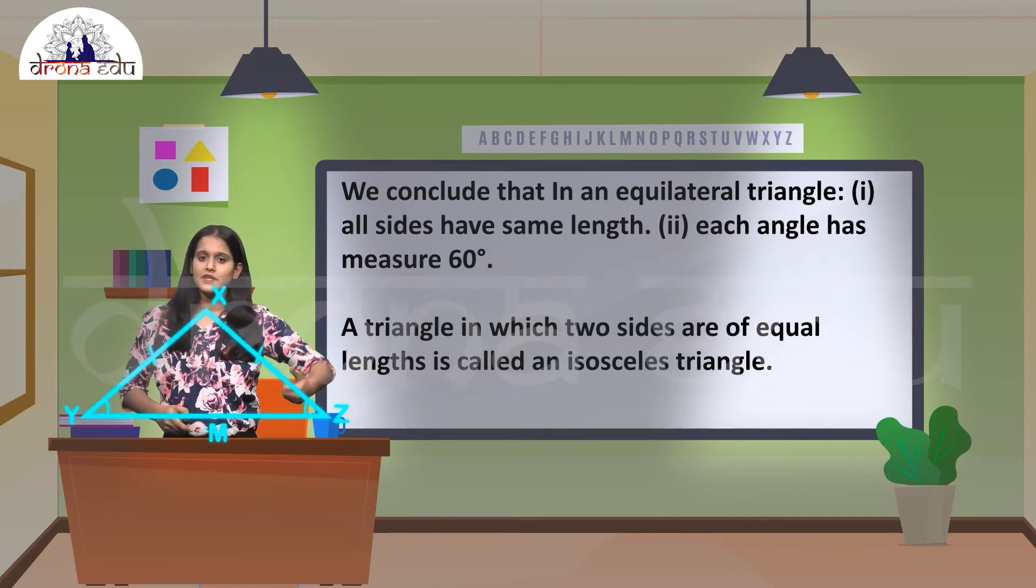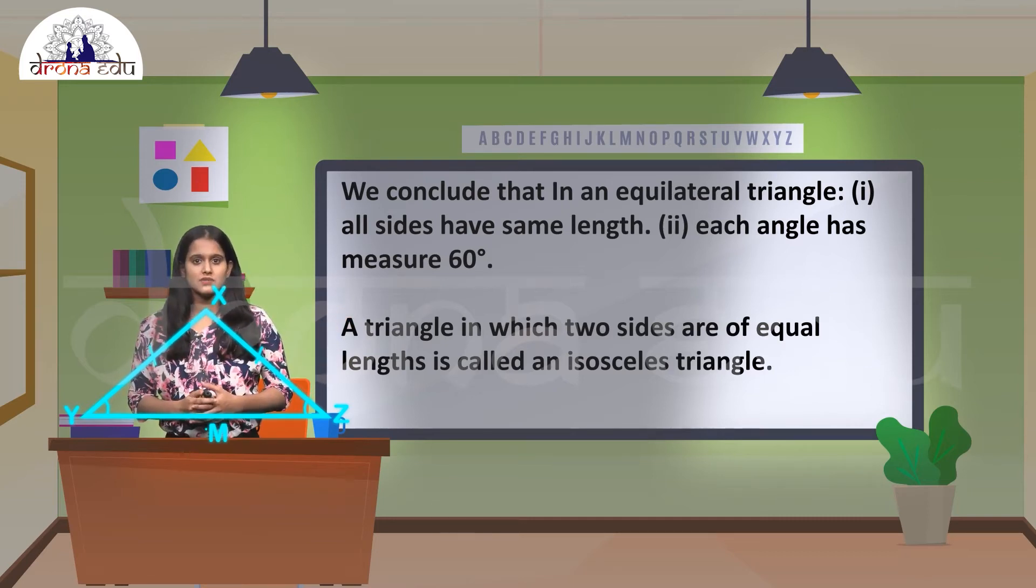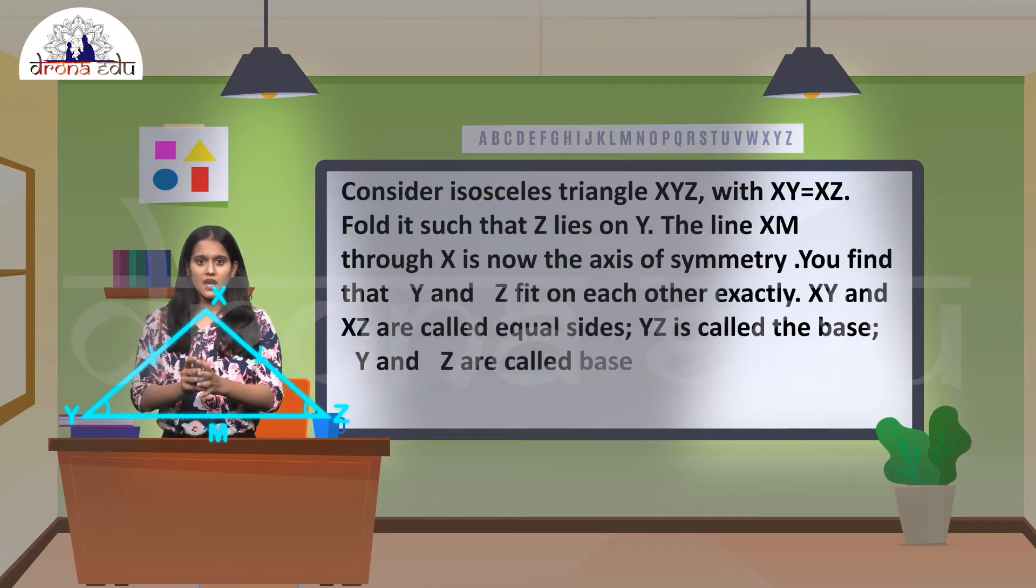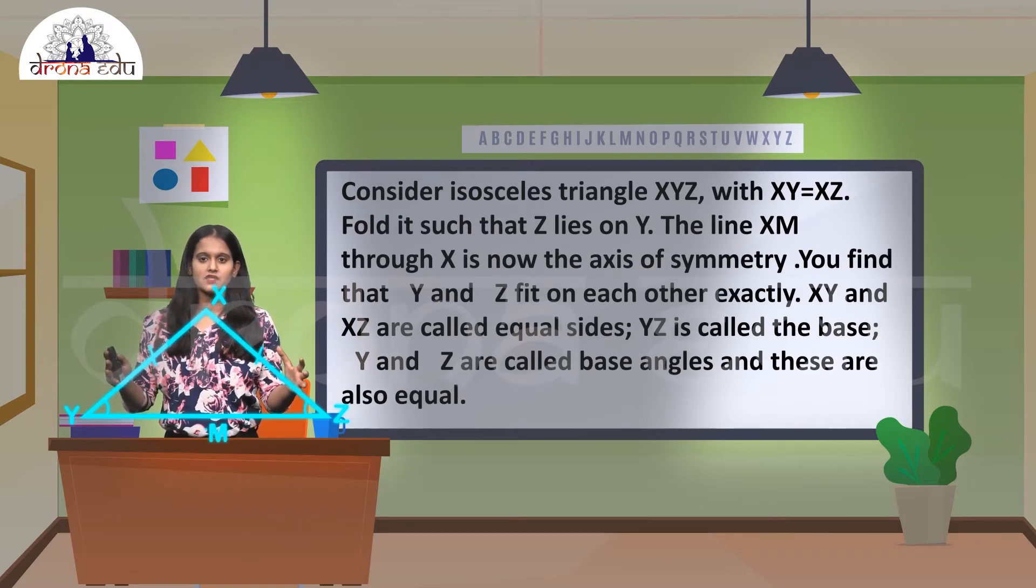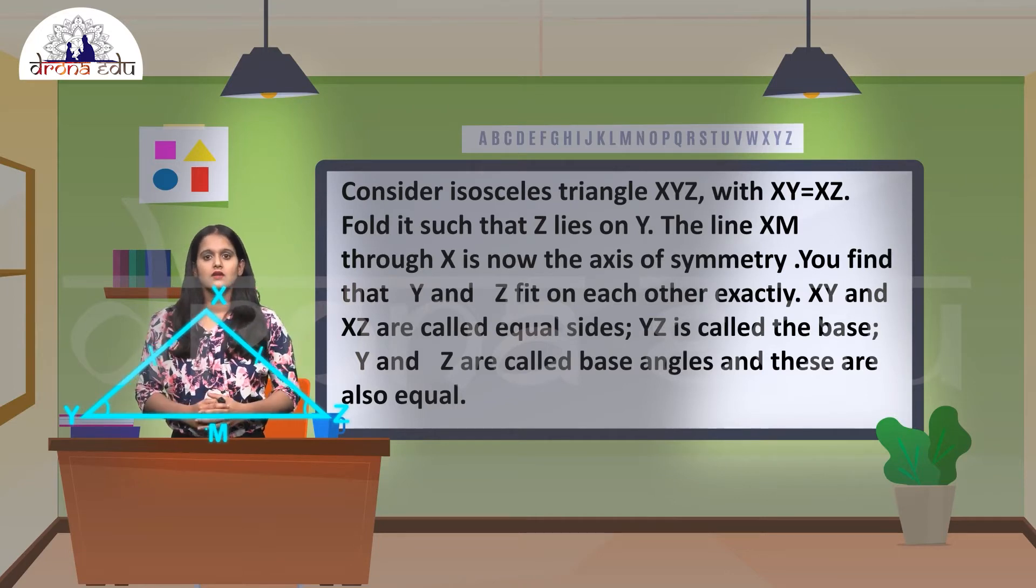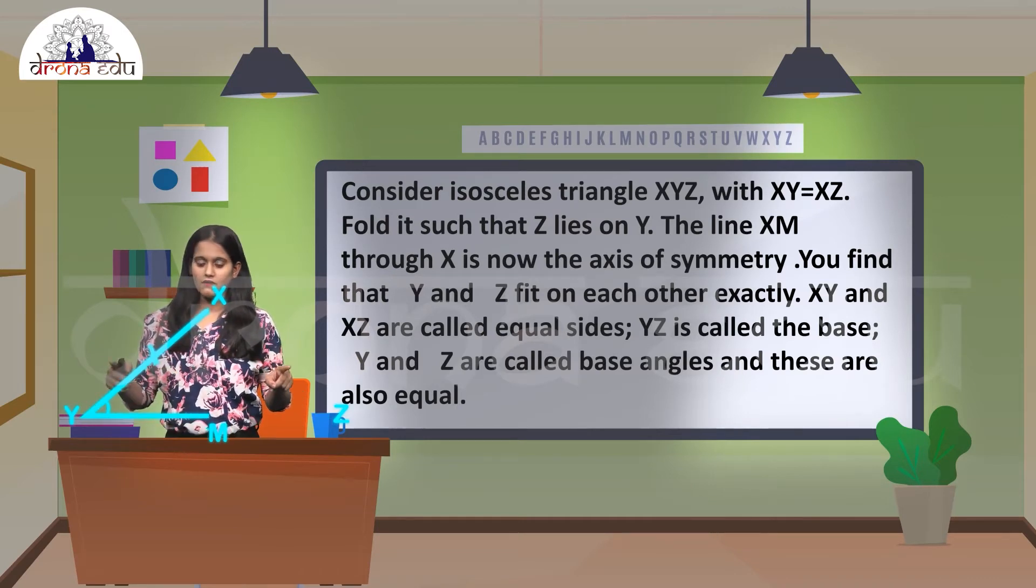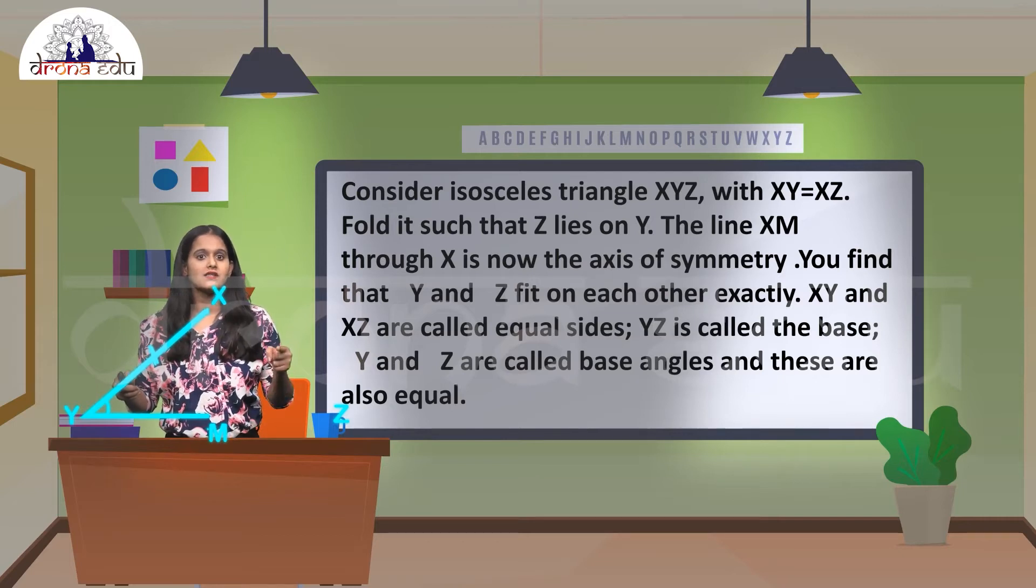Next one. A triangle in which two sides are equal in length is called an isosceles triangle. If I consider the isosceles triangle like this, which is XYZ where XY equals XZ, and when I fold in such a way that Z lies on X.